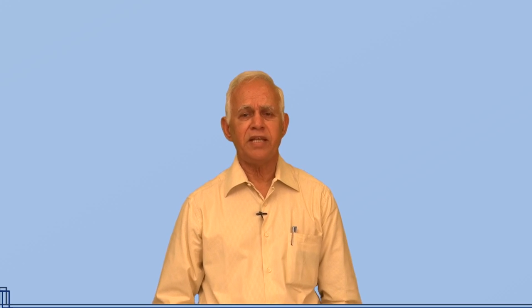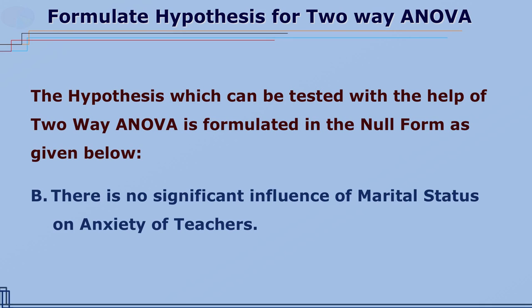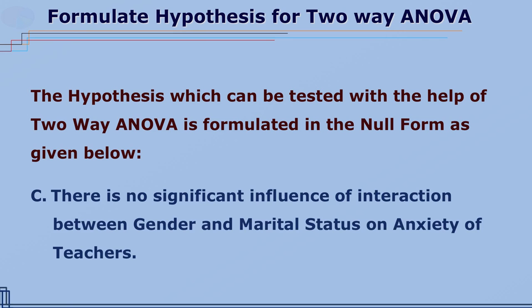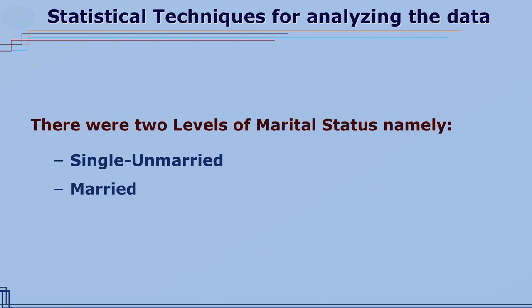The separately worded null hypotheses are: there is no significant influence of gender on anxiety of teachers; there is no significant influence of marital status on anxiety of teachers; and there is no significant influence of interaction between gender and marital status on anxiety of teachers. Since there are two levels of gender (male and female) and two levels of marital status (married and unmarried), the data can be analyzed with two-way ANOVA or a 2-by-2 factorial design ANOVA.